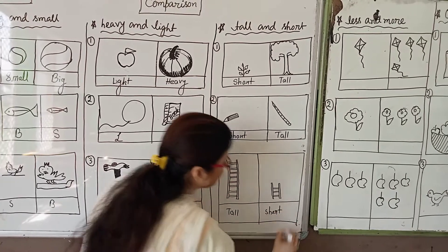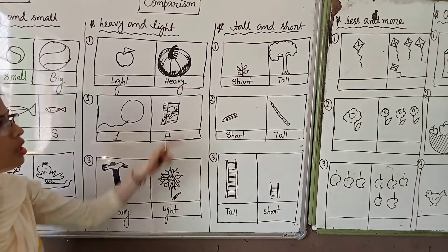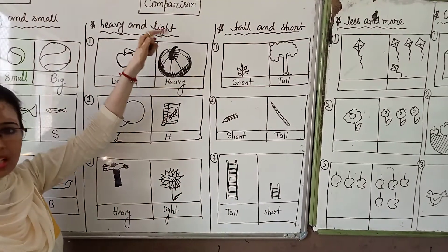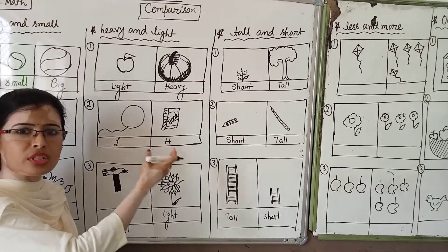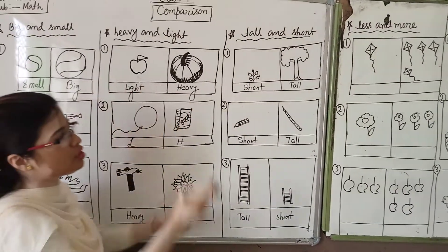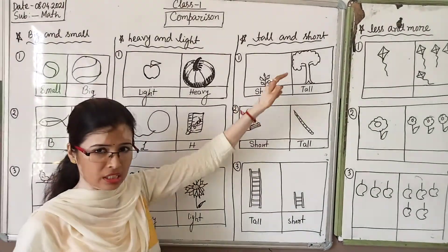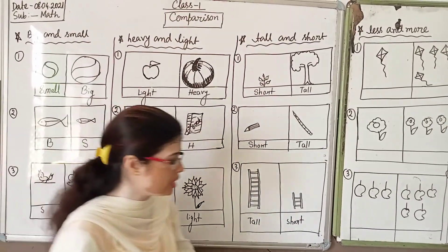One thing I want to tell you: comparison is also about opposite words. Opposite words — small and big, light and heavy, short and tall. These are also opposite words.